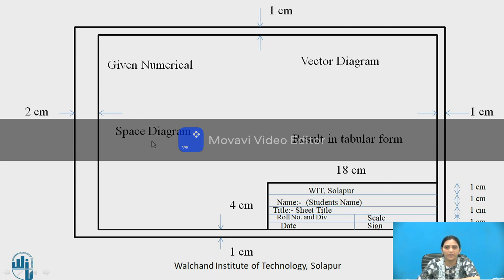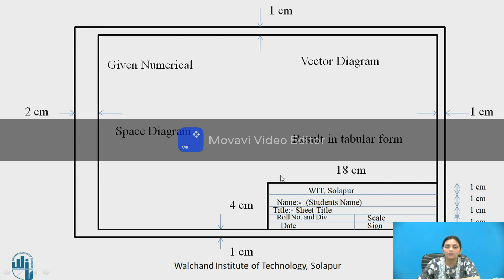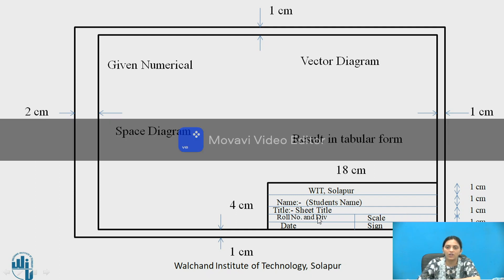Below given numerical, draw space diagram. At the top of right corner, draw vector diagram. Below vector diagram show the result in tabular form. And at the bottom of right corner, draw name plate of size 18 centimeter by 4 centimeter. In the first row, there is the name of the college. In the second row, there is the name of the student. In the third row, there is the title of the sheet. And below that, write your roll number and division, date, scale and signature.